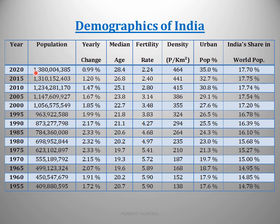In 2020, population is 138 crore something; yearly change is 0.99%, which is the first time it has gone below 1% — a good and positive sign. Median age is continuously increasing and is now 28.4 years. Fertility rate — the average number of children a woman gives birth to in her lifetime — is continuously decreasing and has come down to 2.24, compared to 5.90 in 1955.